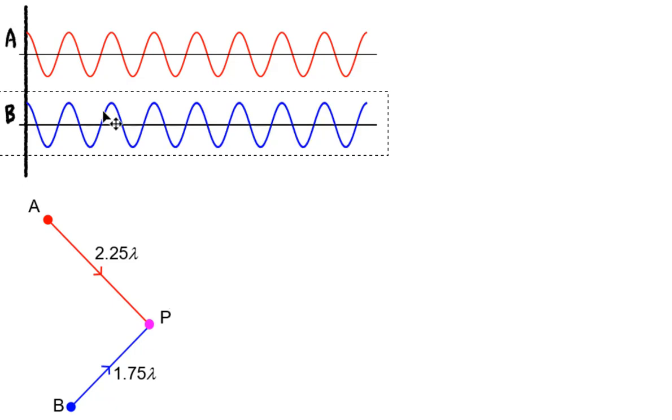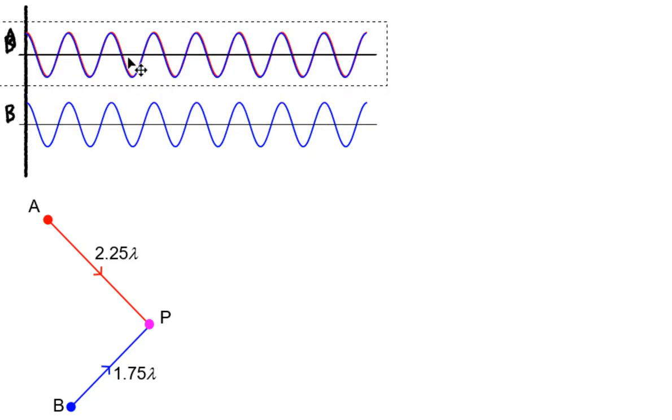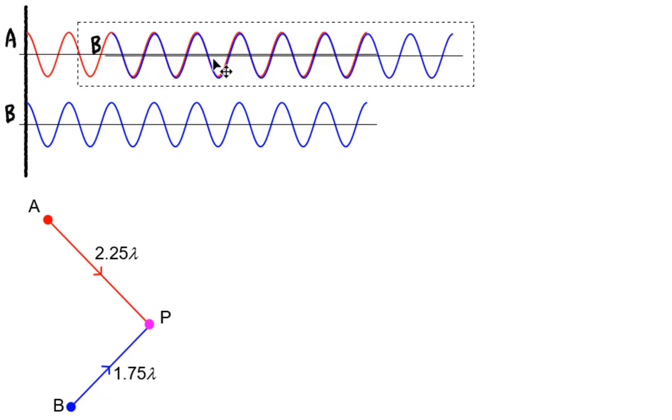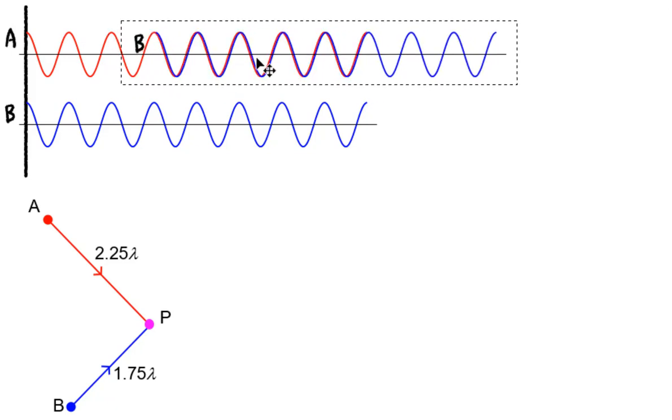Then at the destination point, you are going to get constructive interference when the path difference is zero lambda, one lambda, two lambdas, three lambdas, and so on.